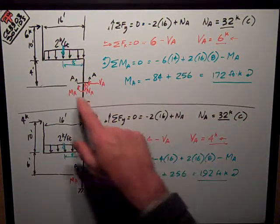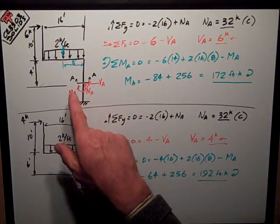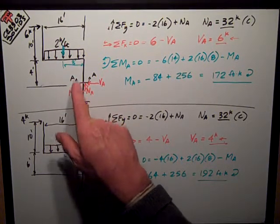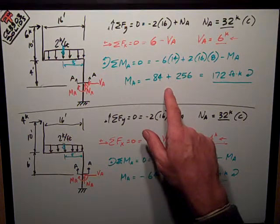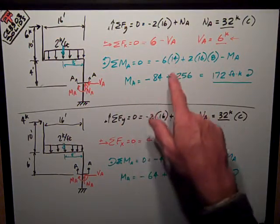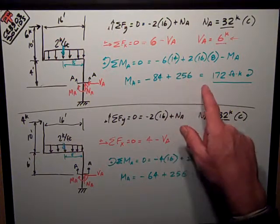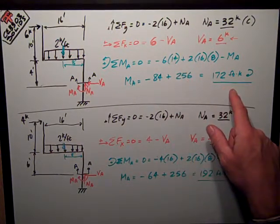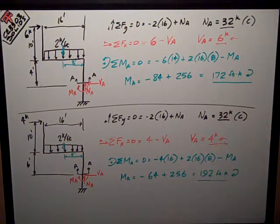And then MA, I've assumed positive in accordance with the instructions, causing compression on the left side. Bringing that over to the other side of the equal sign, I get MA equals negative eighty-four plus two fifty-six. Doing all the math, I get one hundred seventy-two foot kips clockwise.